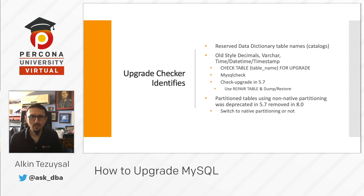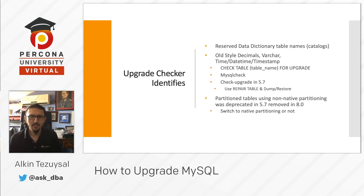Going back to the upgrade checker — upgrade checker identifies reserved data dictionary table names and catalogs. It also checks old-style decimals, datetime, and timestamps. It will report certain things that you may not be able to catch by investigating manually. However, upgrade checker does not fix any of those issues; it only identifies them.